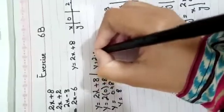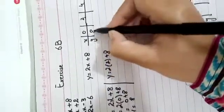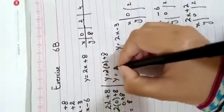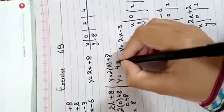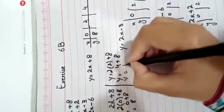Secondly, put in y equals two into two plus eight. The second was two. On zero, y was eight. Now when x is two: two times two is four, plus eight makes twelve.